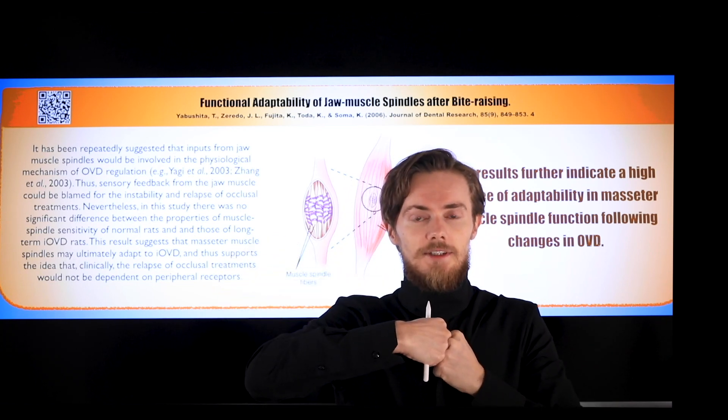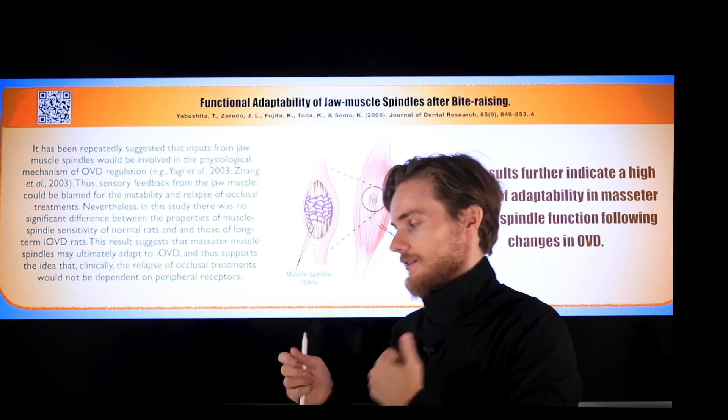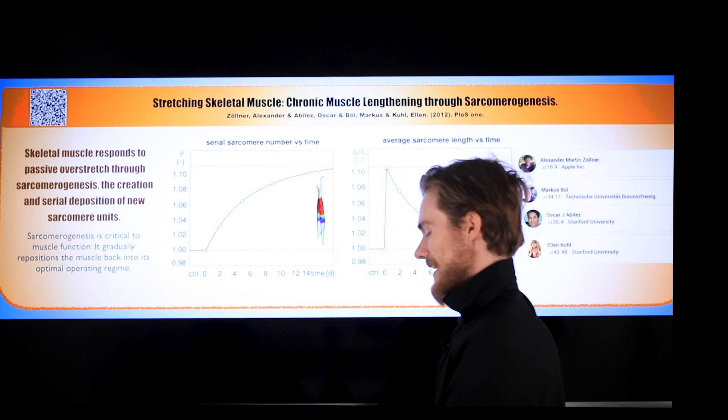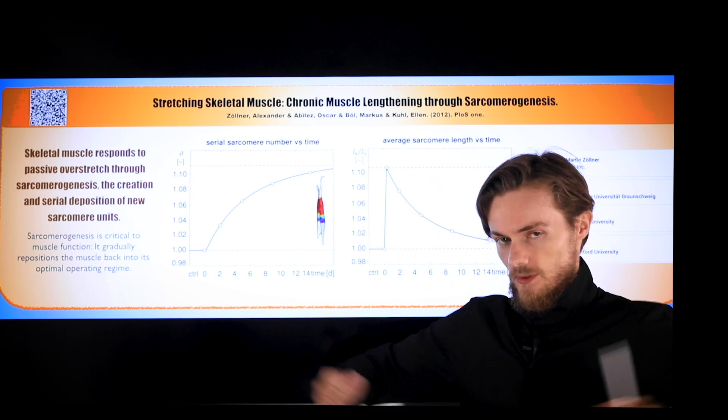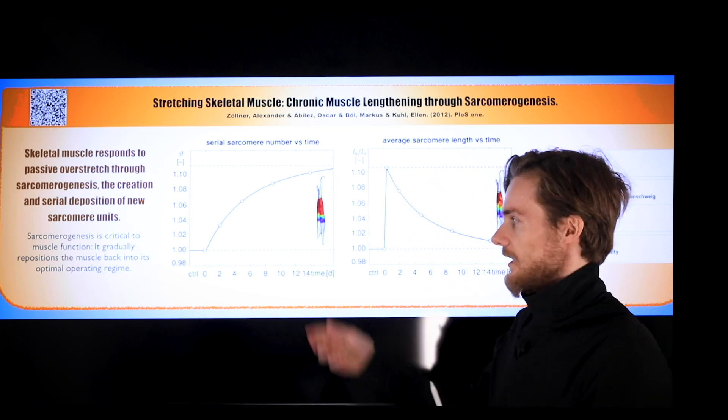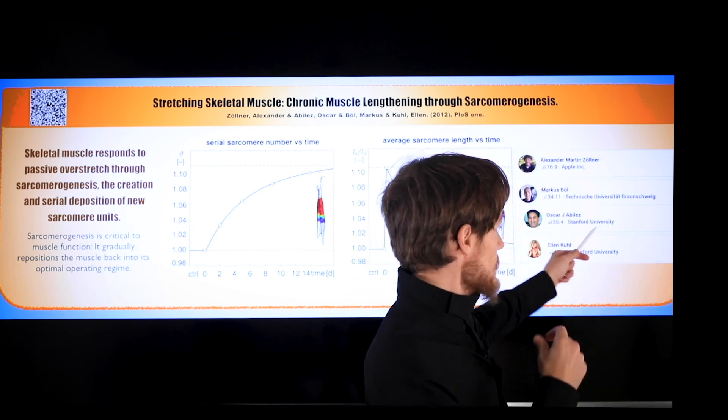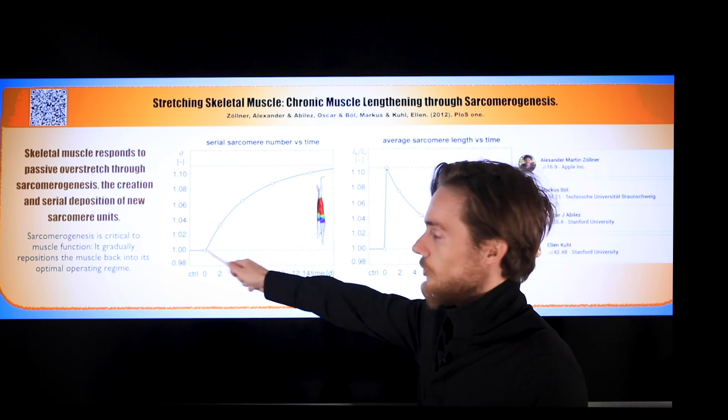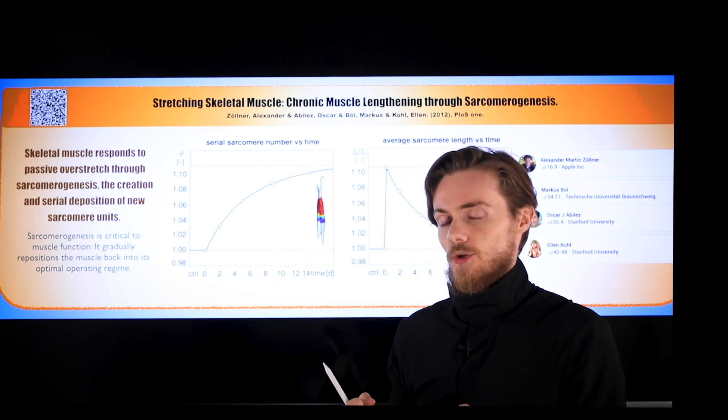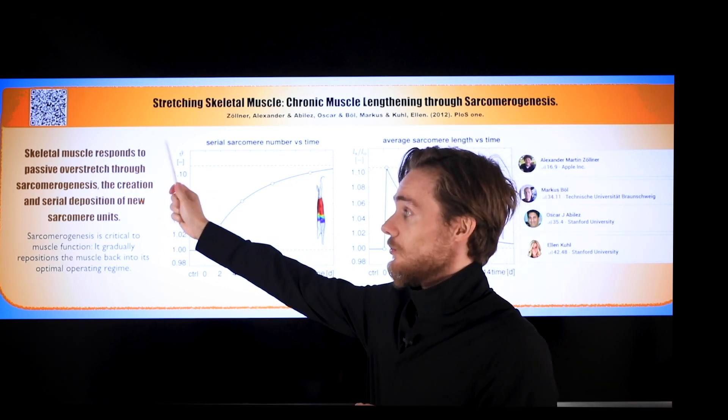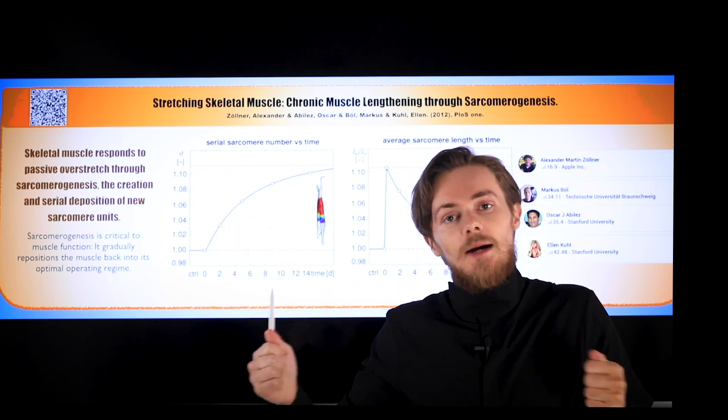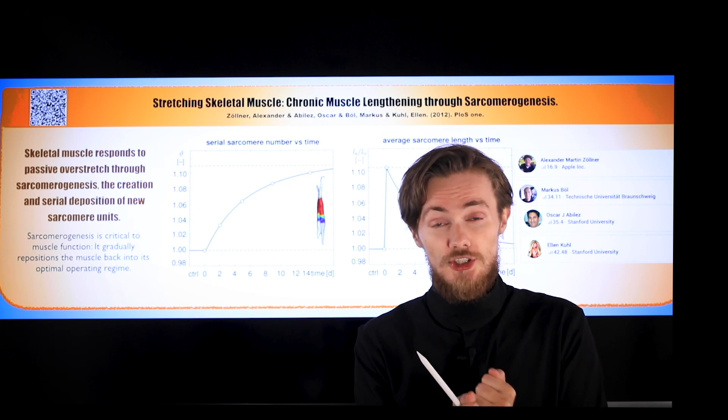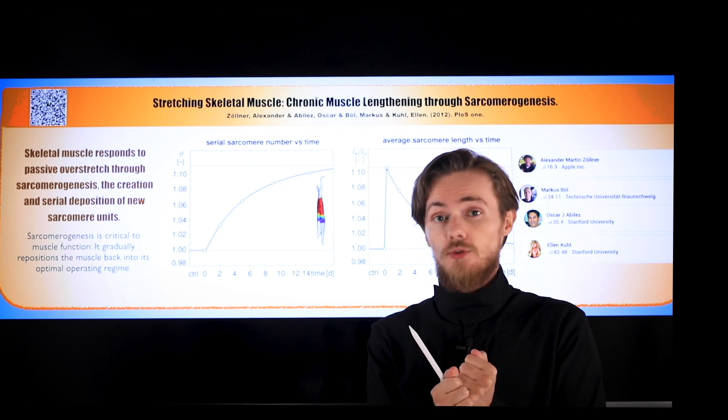And it turned out that adaptability of muscle spindle is very, very high. What also turned out: there were some traumatic studies on rabbits and cats. So they were stretching muscle significantly and they checked what happened. In this study, it was a study from Stanford University in cooperation with Apple company. They did a mathematical model, and it turns out that when you increase the length of the muscle, what happens is the sarcomeregenesis. So the number of sarcomeres is increasing. This is adaptation.